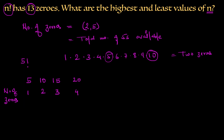Then we move to 25. Interestingly, 25 contributes not just one 5 but two 5s, because 25 = 5 × 5. One 5 is counted as a multiple of 5, and the extra 5 is counted as a multiple of 25. So at 25 factorial we get 2 extra zeros, giving us 4 + 2 = 6 zeros in total.